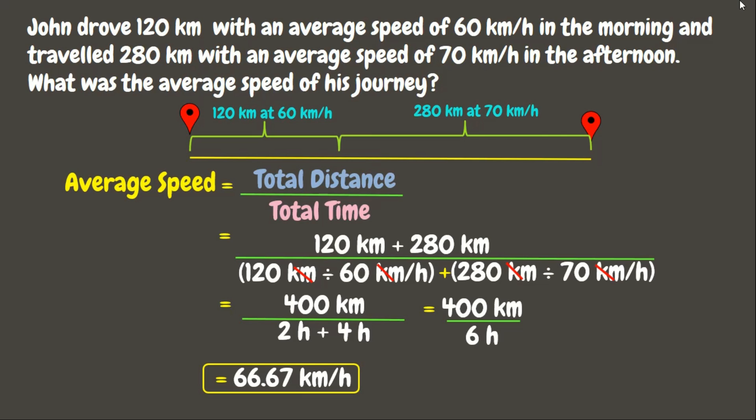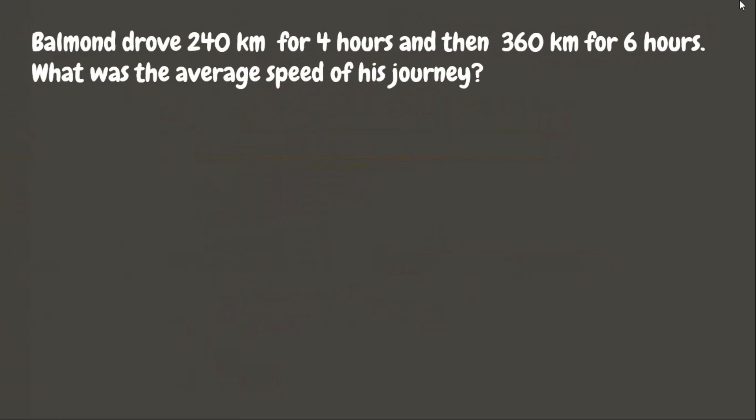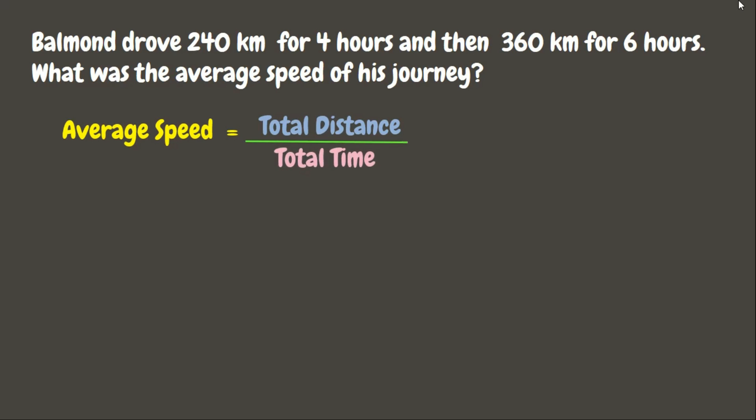Wonderful! Now let's have another one. Problem: one drove 240 kilometers for four hours and then 360 kilometers for six hours. What was the average speed of this journey? To solve, we divide the total distance traveled by the total time consumed.